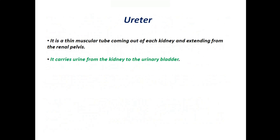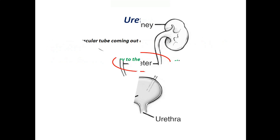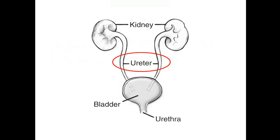Now let's look at the rest of the parts of the excretory system. The ureter is a thin muscular tube coming out of each kidney and extending from the renal pelvis. It carries urine from the kidney to the urinary bladder. The red circle indicates the diagram of the ureter.